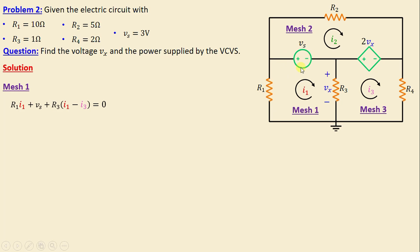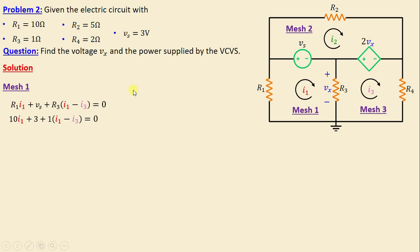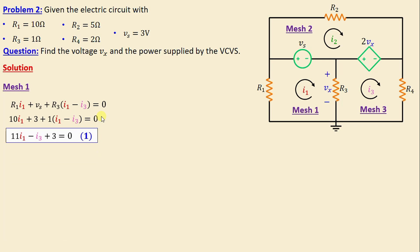Let's start with mesh one. Applying Kirchhoff's voltage law in mesh one, we can write: R1 times i1 plus Vs plus R3 times (i1 minus i3) is equal to zero. Replacing resistors and voltage with their numerical values, we obtain: 10 i1 plus 3 plus 1 times (i1 minus i3) is equal to zero. Simplifying: 11 i1 minus i3 plus 3 is equal to zero.